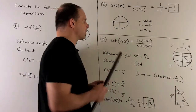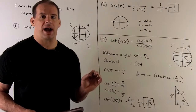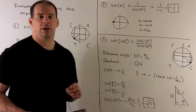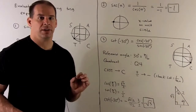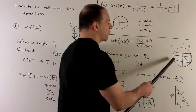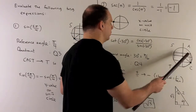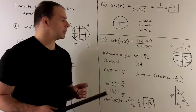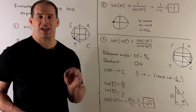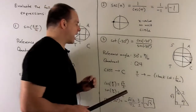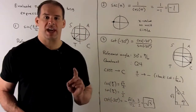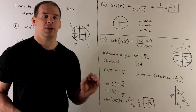Finally, we have cotangent of −30 degrees. Again, this is typically not one we memorize, so we write it in terms of sine and cosine: cosine of −30 degrees over sine of −30 degrees. We want the reference angle and quadrant for −30 degrees. Plotting on the unit circle, we're in quadrant 4. The reference angle goes up to 30 degrees, which is π over 6. Using the CAST method in quadrant 4, cosine is positive while sine and tangent are negative. For cotangent — which is cosine over sine — positive over negative gives a negative. We can also check: cotangent is 1 over tangent, tangent is negative, so again we get a negative.